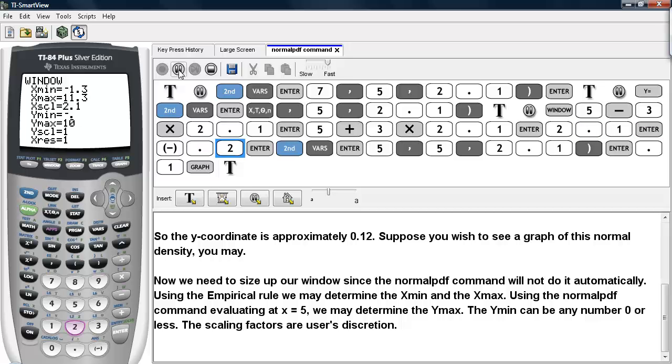The y-min I'll choose to be negative 0.2. Now the y-max, I'm again going to use the normalpdf command, evaluate this at 5, with a mean of 5, and a standard deviation of 2.1. And then I'll type in the y-scaling as 1 tenth.